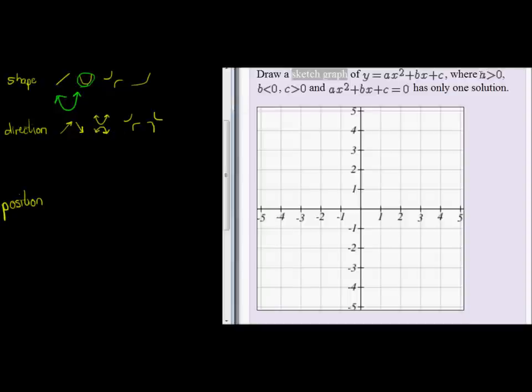According to the information given, a is positive. Now a, the leading coefficient, represents the directional coefficient. So it is positive, which means I'll end up going up, which means I will have this direction.